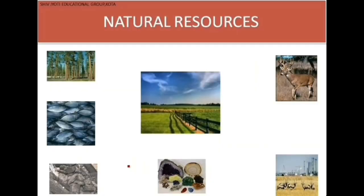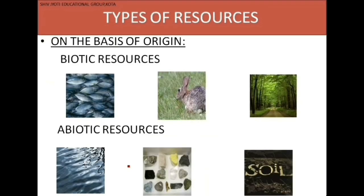Classification of resources: natural resources are the gifts of nature we can see all around — fish, plants, forests, agricultural lands, animals, minerals, etc. On the basis of origin, we can classify resources as biotic resources and abiotic resources.